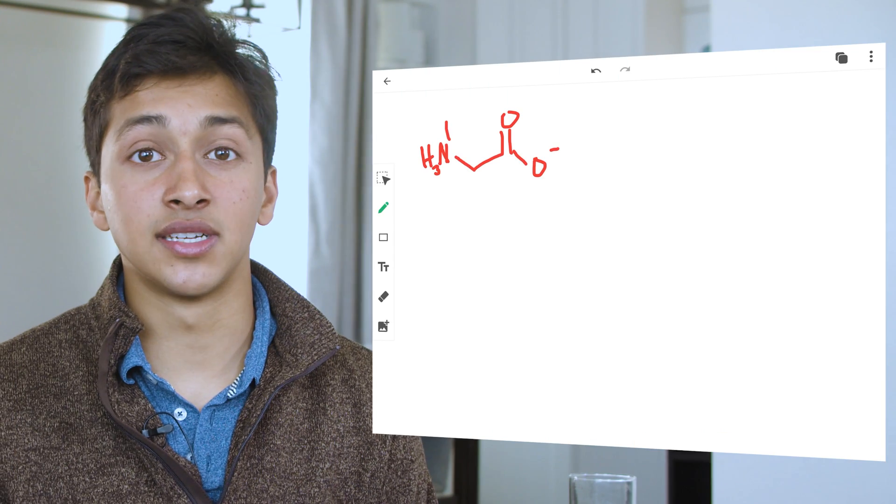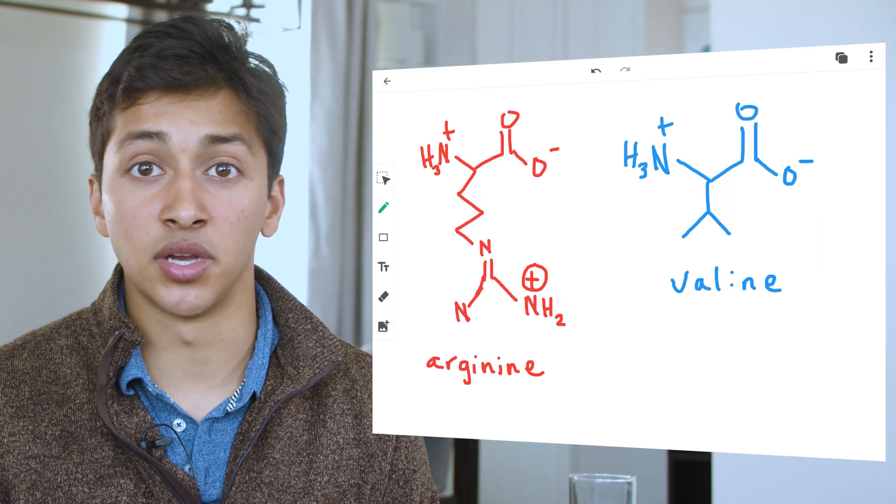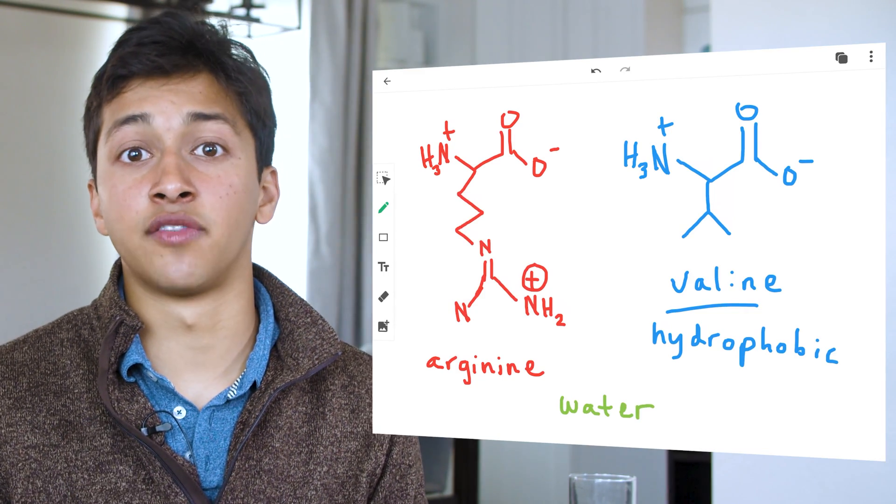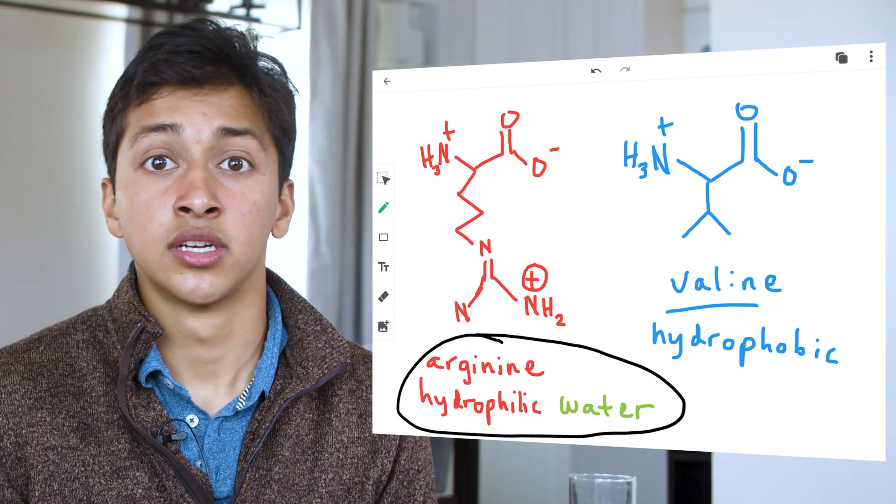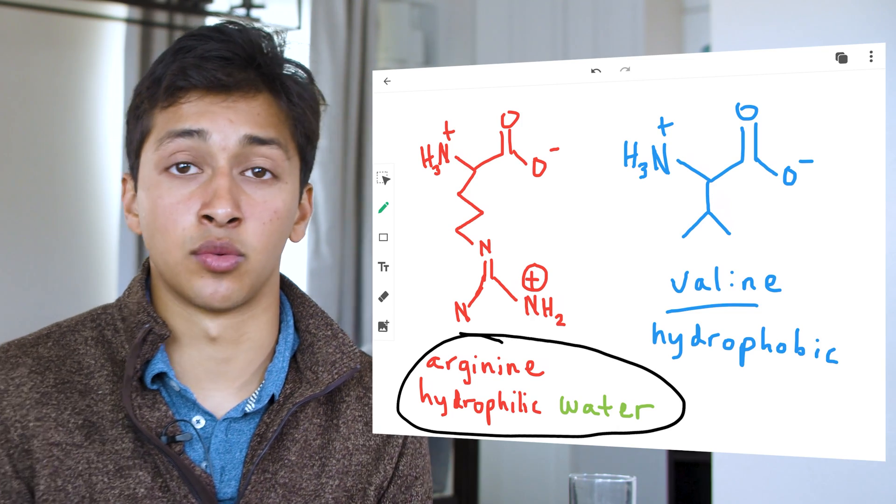For example, would you be more likely to see an arginine, which carries a positive charge, or a valine, which is hydrophobic, on the exterior of a protein? The exterior of a protein is usually composed of hydrophilic residues, since it interacts with water. So we would be much more likely to see the charged arginine, which can interact with water.